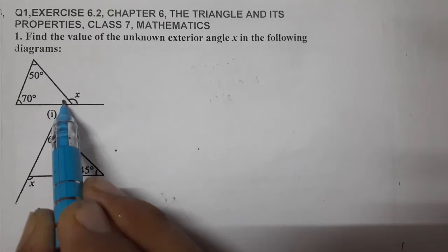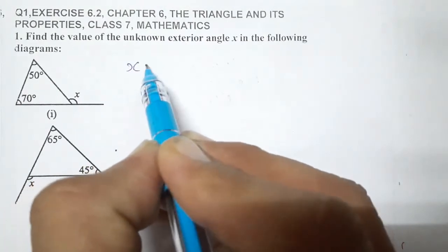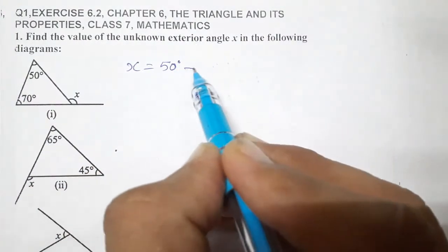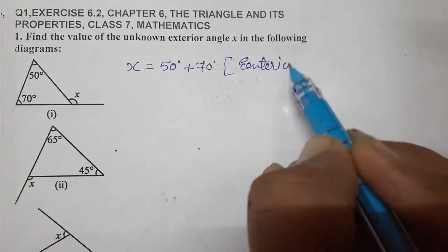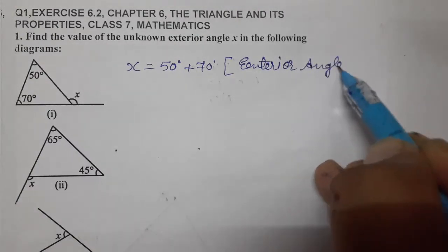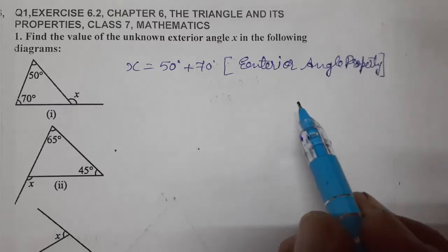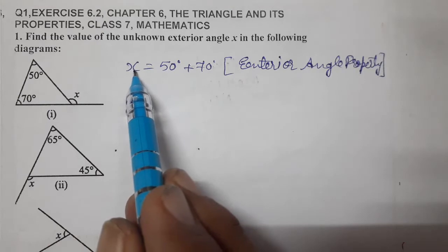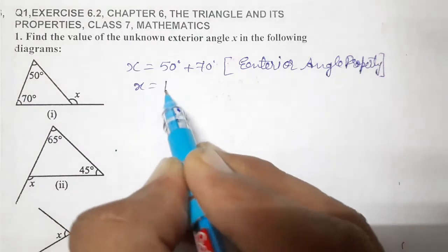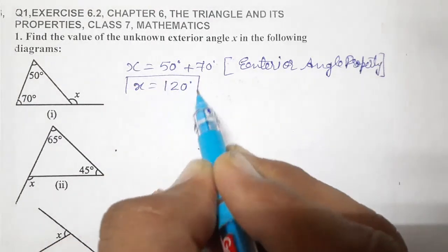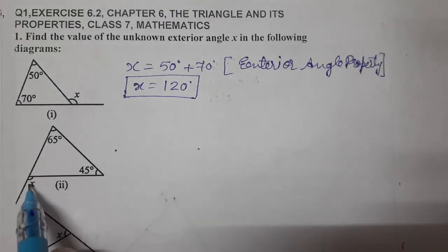For the first diagram, the interior opposite angles are 50° and 70°, so X equals 50° plus 70°. The reason is the exterior angle property — an exterior angle of a triangle equals the sum of its interior opposite angles. So X equals 50 plus 70, which is 120°. This completes the first part.